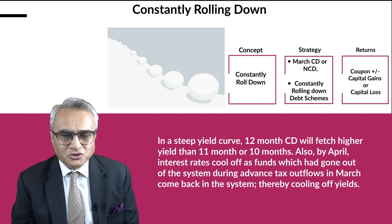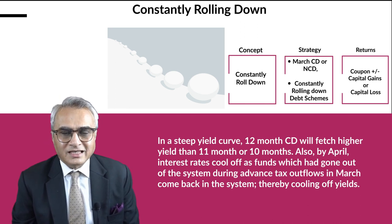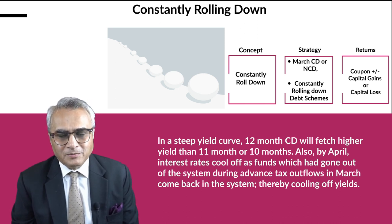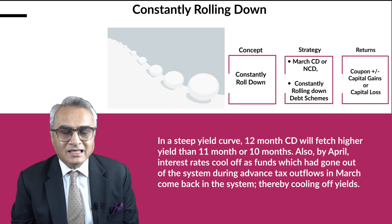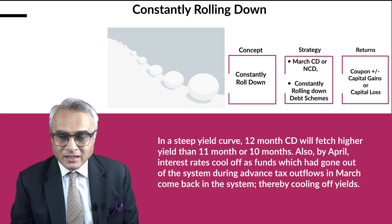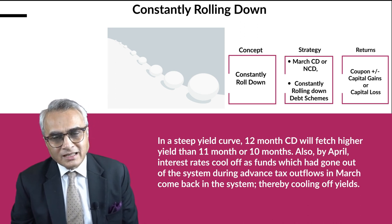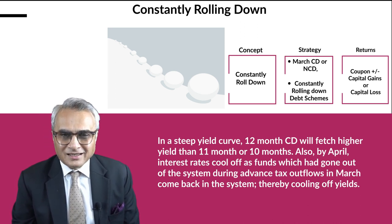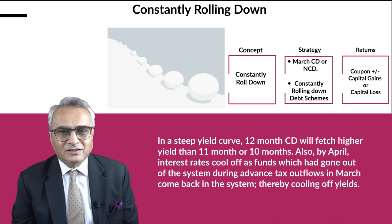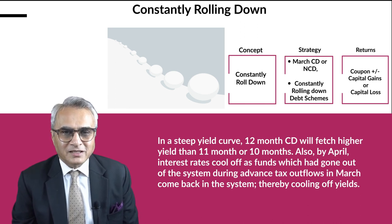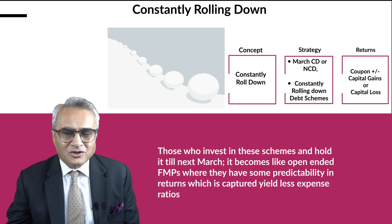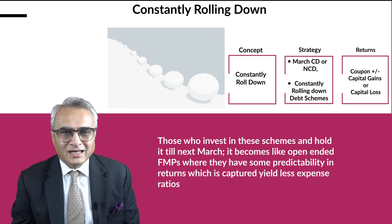That investor has two choices: one, either hold it till maturity in the next March and receive the captured yield of 10% less the expense ratio; or add on to the investments when interest rates have gone up to 12% in July and hold it till the next March, receiving returns of 12% less the expense ratio.